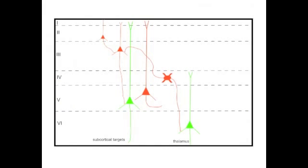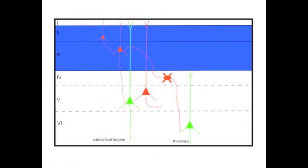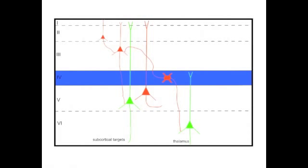The cortex is organized into six layers, with cells in each layer making stereotype patterns of connections. Cells in layer 2-3 make intracortical connections onto each other and connections primarily onto neurons located in layer 5. Layer 4 cells receive inputs from the thalamus and connect onto cells in layer 2-3 primarily.